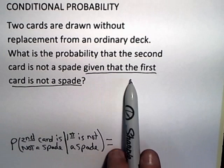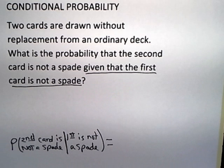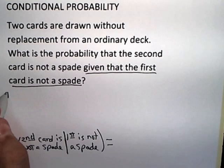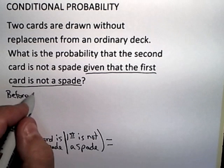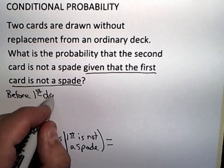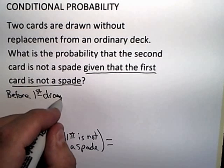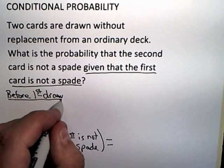Remember that the condition gives us a reduced sample space. So what I want to look at is what was the sample space before I did any drawing at all? I'll just actually write that out. Before the first draw, what did the sample space look like?